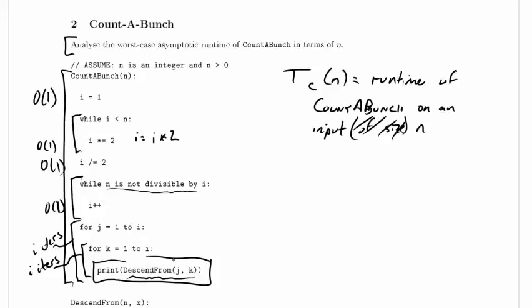Well, we can sort of delay the problem of figuring out how long descendfrom takes by just giving the runtime of that function a name. So we can just say descendfrom, I'm going to use descendfrom's parameter names here, n and x.